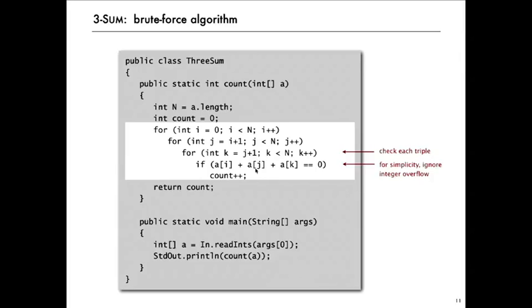And then if a[i] plus a[j] plus a[k] equals zero, we increment the count. And after that triple for loop, we return the count. And then the main method in this simple class just reads in all the integers and prints out the count. So that's a brute force algorithm that is a fine method for solving the three sum problem.